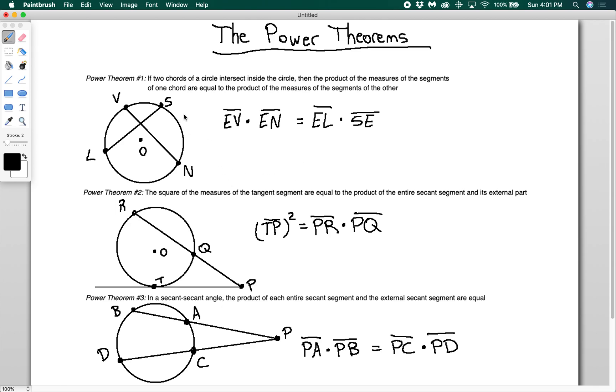The first power theorem is that if two chords of a circle intersect inside the circle, then the product of the measures of the segments of one chord are equal to the product of the measures of the segments of the other. In this diagram I've drawn here, there's no E.